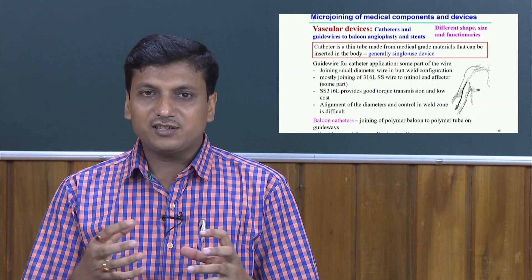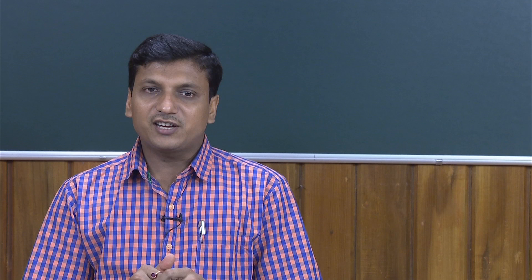The stent is a permanent implant. Stents are typically produced by laser cutting from a tube and welded onto a small wire. The objective is that the stent, in collapsed form, is delivered to a very precise location. Challenges include achieving excellent surface finish and edge finish, control of the heat affected zone, and extreme control of orientation and the laser cutting path.